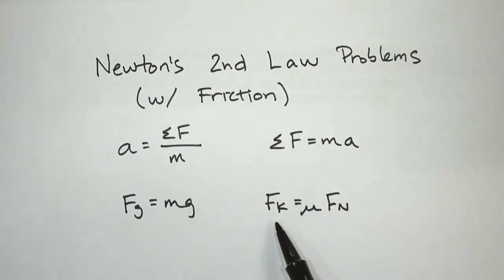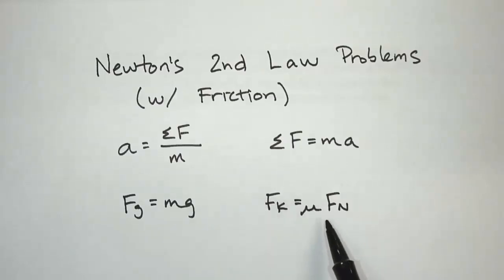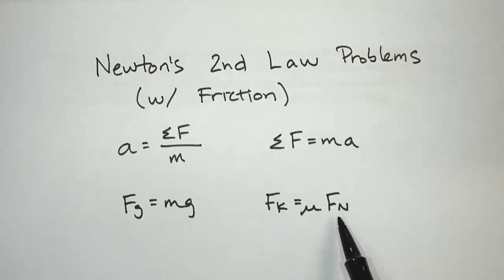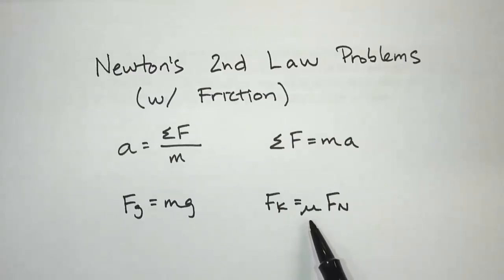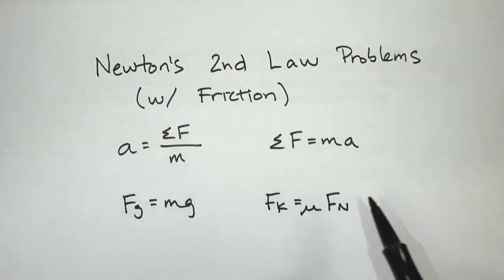You should also know kinetic friction. The equation for kinetic friction is mu times Fn. Mu stands for the coefficient of friction, which depends on the type of surfaces in contact with each other. And Fn is the normal force.